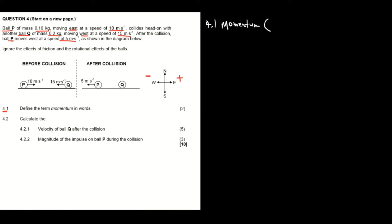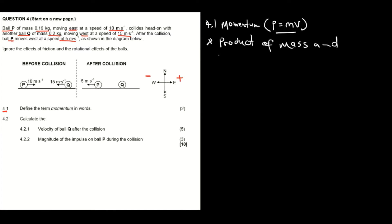Momentum is given by p = mv. We can define momentum using this equation, which states that it is the product of mass and velocity. So this is the definition of momentum.